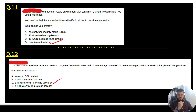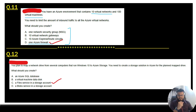Question 11: you have an Azure environment containing 10 virtual networks and hundreds of virtual machines. You need to limit the amount of inbound traffic to all Azure virtual networks. You only need one Azure Firewall to stop traffic to the virtual networks, so option D is the correct answer.